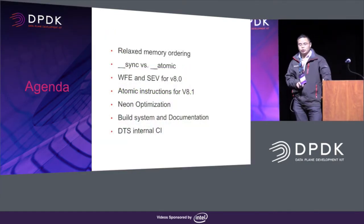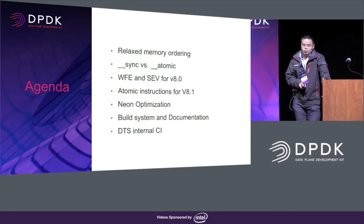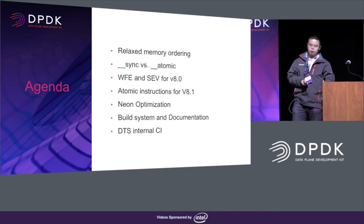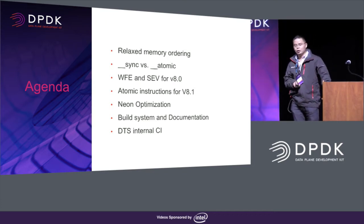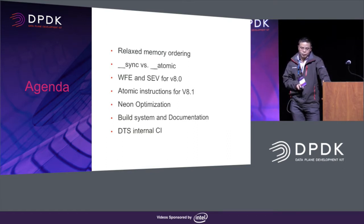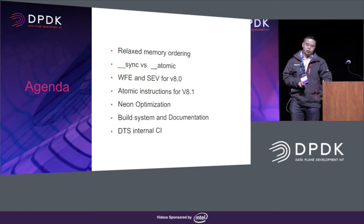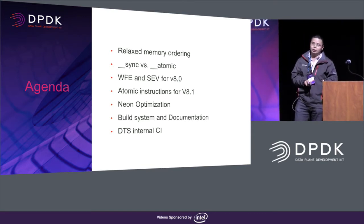I will go through this list. The first one is relaxed memory ordering. The second one is sync versus atomic built-ins. The third one is about wait-for-event and send-event. These are new instructions from ARMv8.0. The fourth one is atomic instructions introduced in v8.1. The fifth one is new optimization. And the last two are about build system and documentation for ARM64, and DTS test cases and our internal CI.